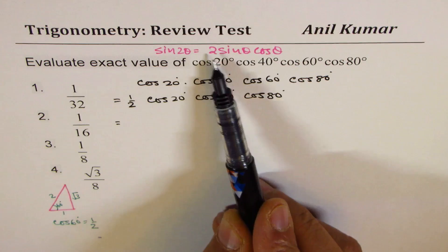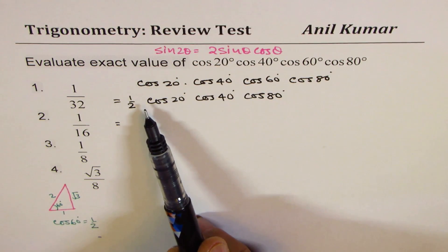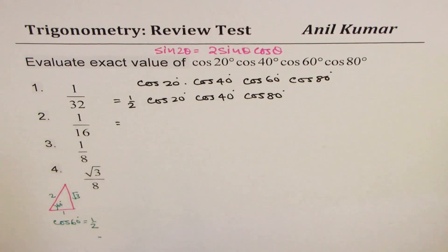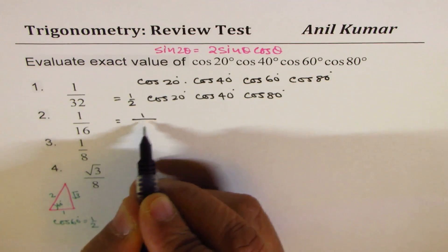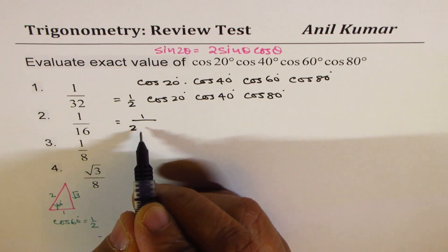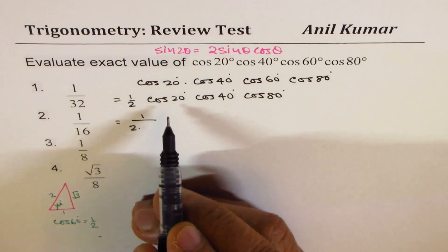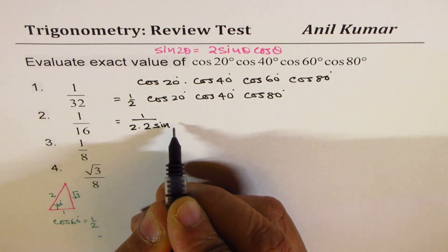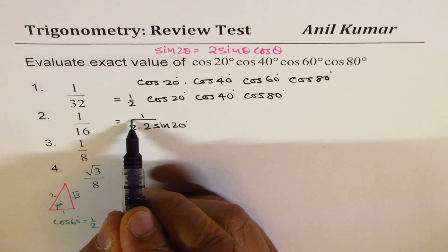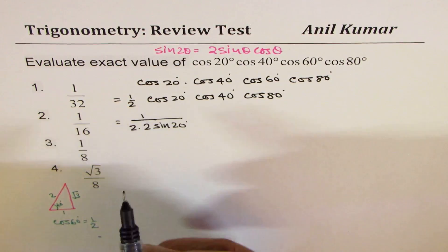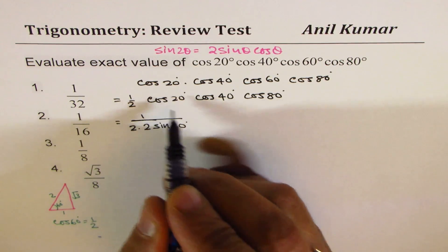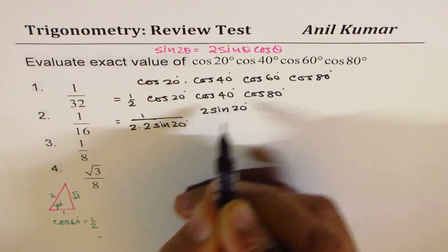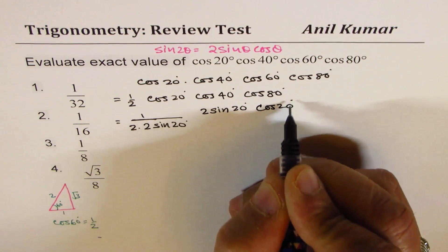To get this term 2 sine θ cos θ, we can actually multiply and divide by 2 sine 20° to begin with. So we have 1 over 2, so we'll divide by the term 2 sine 20°. We'll multiply by 2 sine 20° in the denominator. In the numerator also we have to multiply by this term, so we get 2 times sine 20°, and then cos 20°, cos 40°, cos 80°.